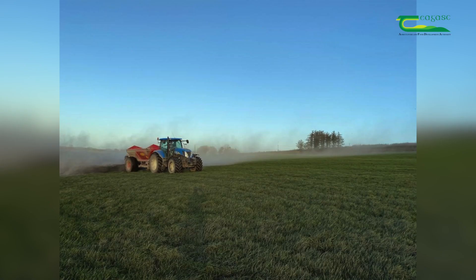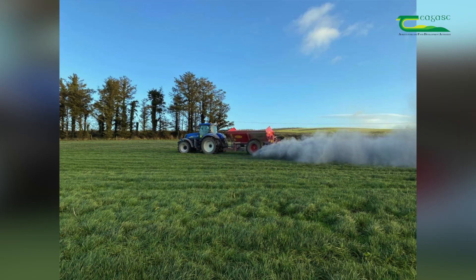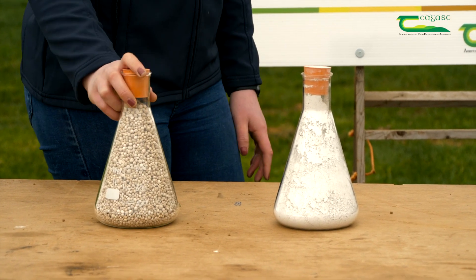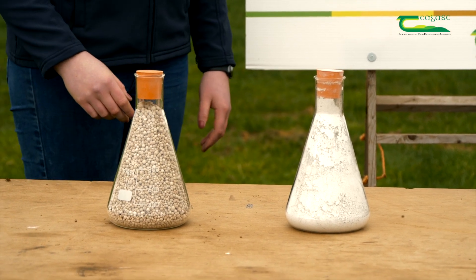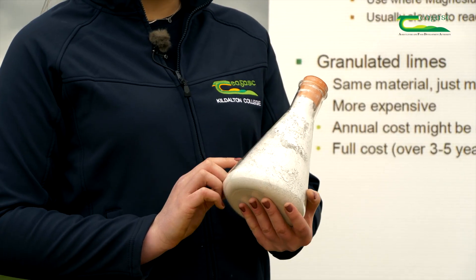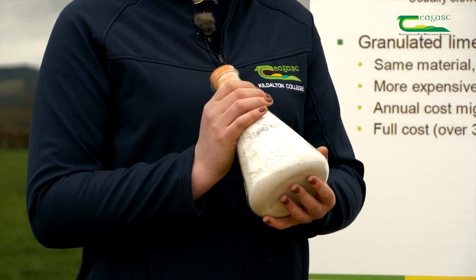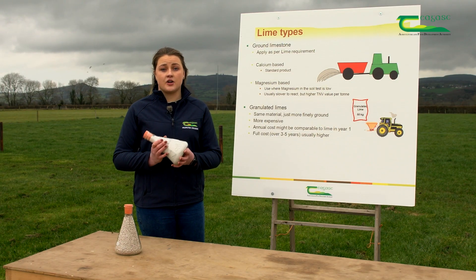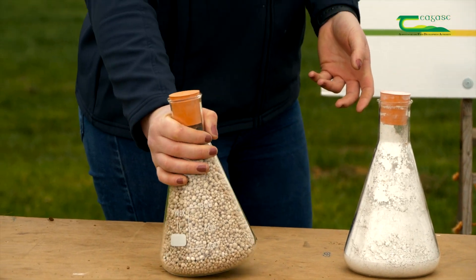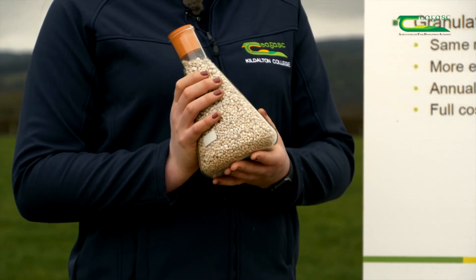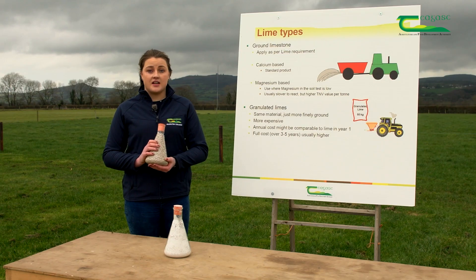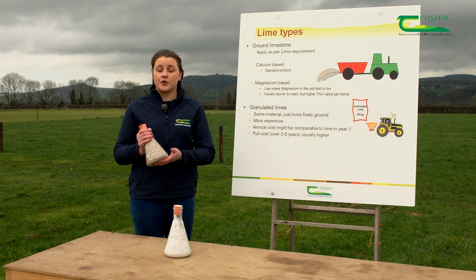We should spread lime in line with our soil test results. There are two options: ground lime or granulated lime. Ground lime is relatively inexpensive at about €25 per tonne, made up of small particles up to 3.35 millimetres. It takes about two years to incorporate into the soil but can last five to six years. Granulated lime is made of fine quarry lime dust, incorporates very quickly but only lasts about one grazing season, and costs around €160 per tonne.